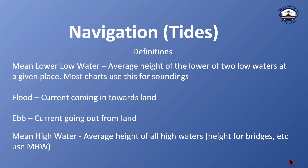Mean lower low water is the average height of the lower of the two low waters at a given place. If you look at a graph of the tides, there's usually two highs and two lows, which is known as diurnal. The two lows — one is usually lower than the other. Mean lower low water is the mean of the lower low tides for a given period of time, and that's what we use on charts for soundings.